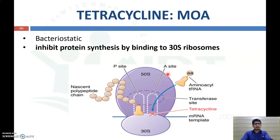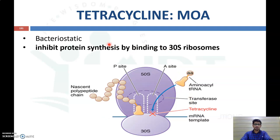The mechanism of action of tetracycline is inhibition of protein synthesis by binding with the 30S ribosome, thereby preventing the synthesis of protein and inhibiting the growth of microorganisms. This produces a bacteriostatic effect.